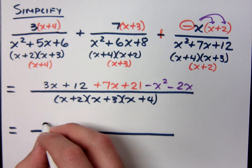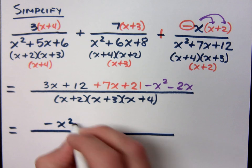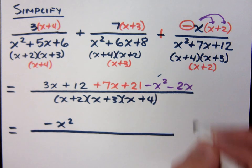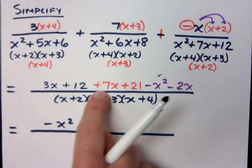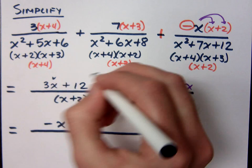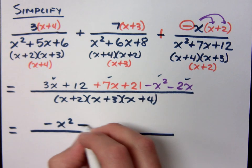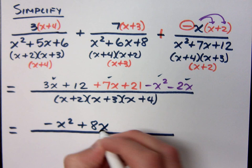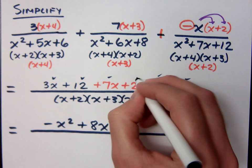8x plus 33 minus x squared. Well, let's write this in descending order with the highest degree term first. So negative x squared. That means I've used this guy. I've got 3, 7, minus 2 for the x is how much? And then 12, 21 is 33.